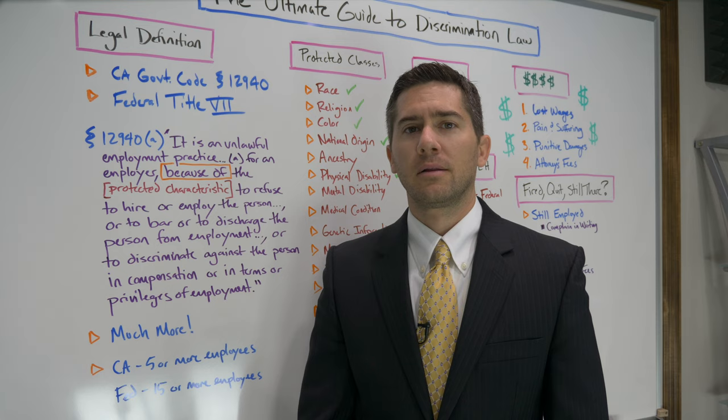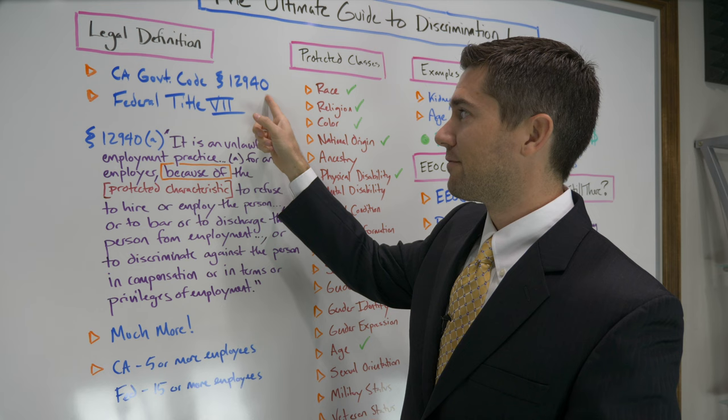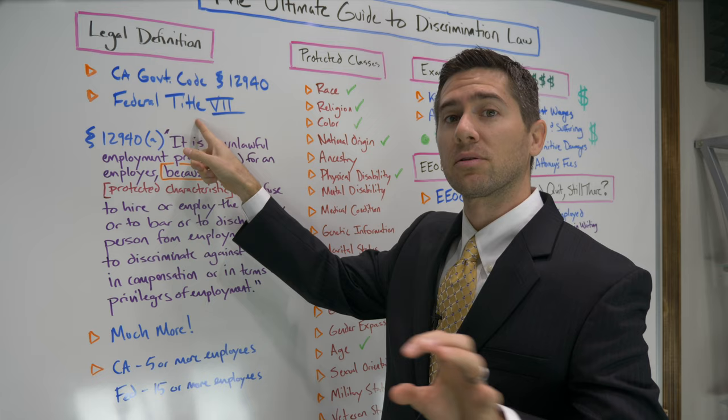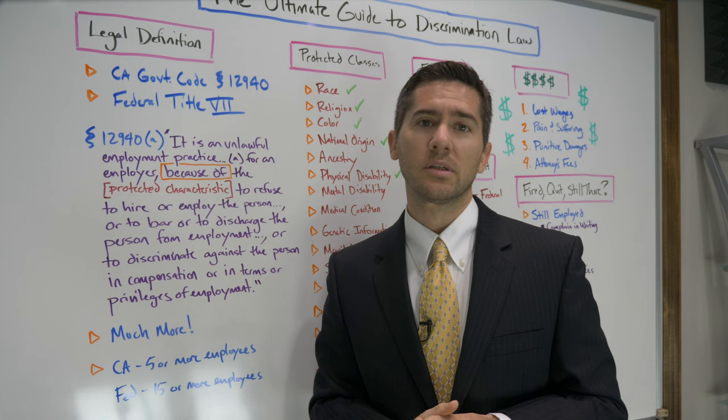Alright, let's get to the good stuff. Let's first cover the legal definition of discrimination. In California, the main anti-discrimination law is Government Code section 12940. If you're not in California, Title VII is the federal anti-discrimination law, which protects everybody in America. But your specific state may have an additional anti-discrimination law, and you should look those up.